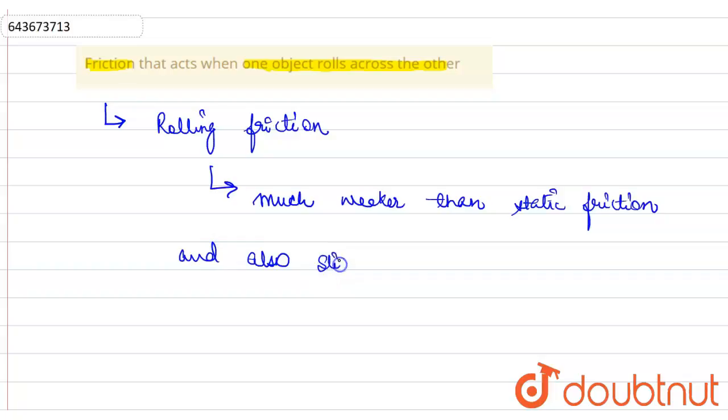So what exactly is rolling friction? Rolling friction is the friction when one object rolls over or across another object.